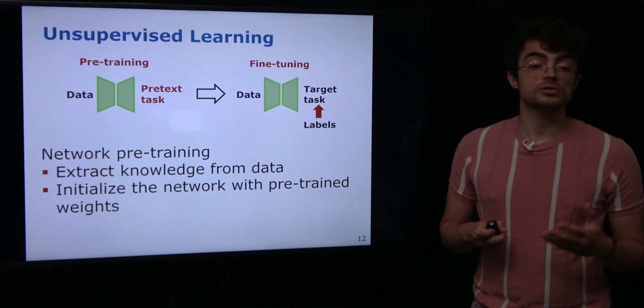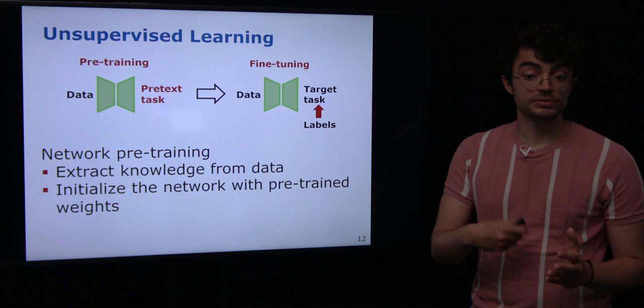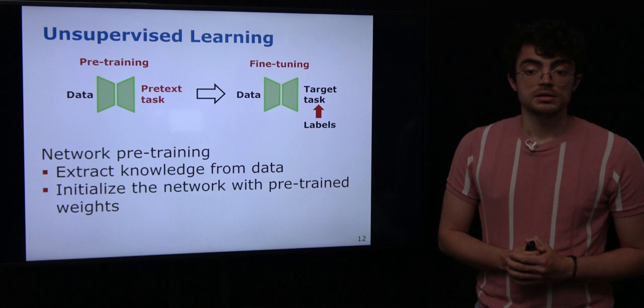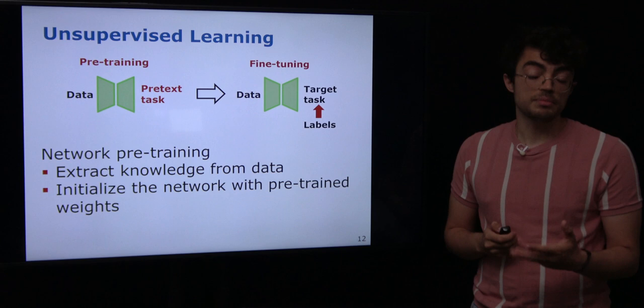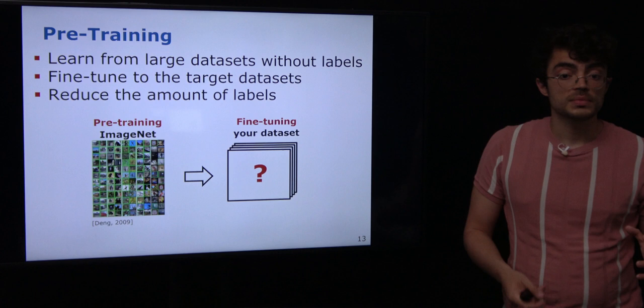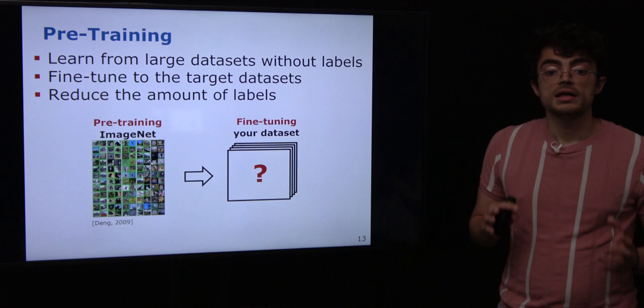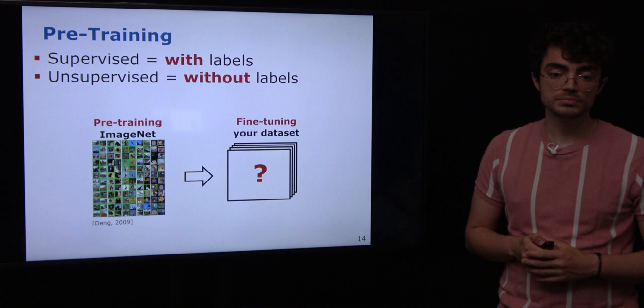In the context of learning-based methods, we can also think of pre-training the convolutional neural network. To do that, we define a pretext task — an easier task where we can define the labels online so we don't need to label them manually. We train the model to solve this pretext task, then fine-tune the pre-trained model to the target task using actual manually labeled data. The idea is that we pre-train on a large dataset, then fine-tune on a smaller target dataset, hopefully reducing the amount of labels needed to achieve high performance.